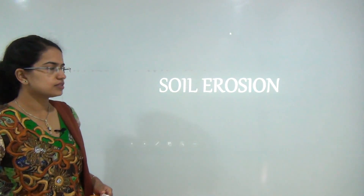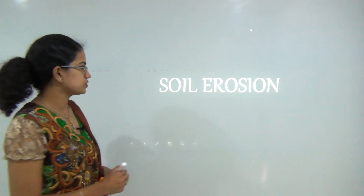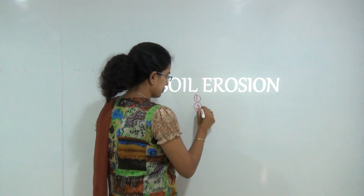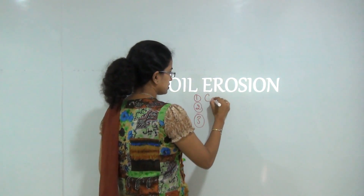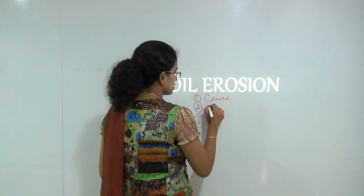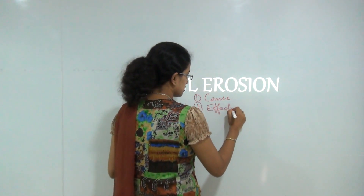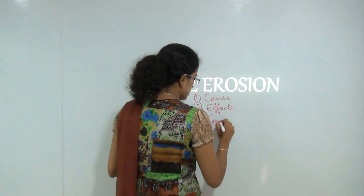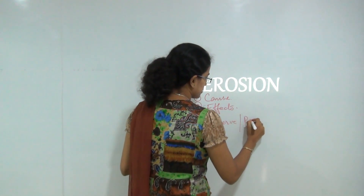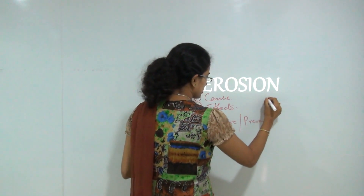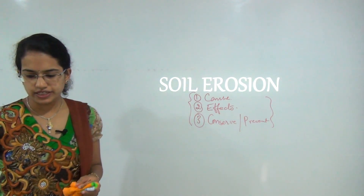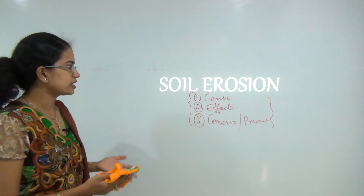Today we will be talking about the concept of soil erosion. We will be discussing three major parameters: first, the causes of soil erosion; second, the effects of soil erosion; and third, how we can conserve or prevent soil erosion. These will be the basic ideas we will be discussing today.